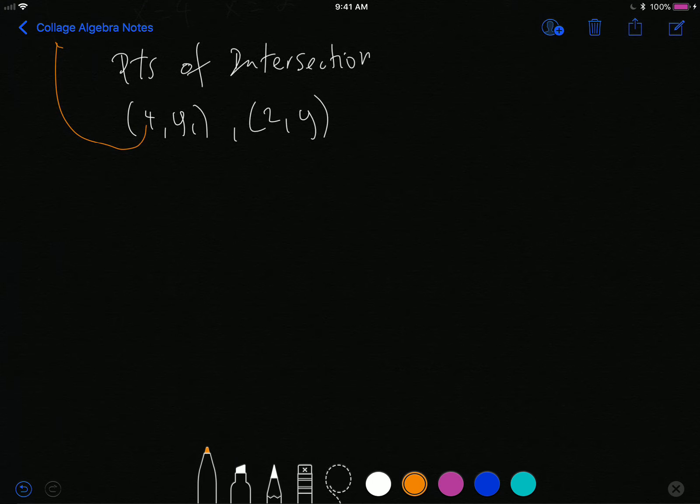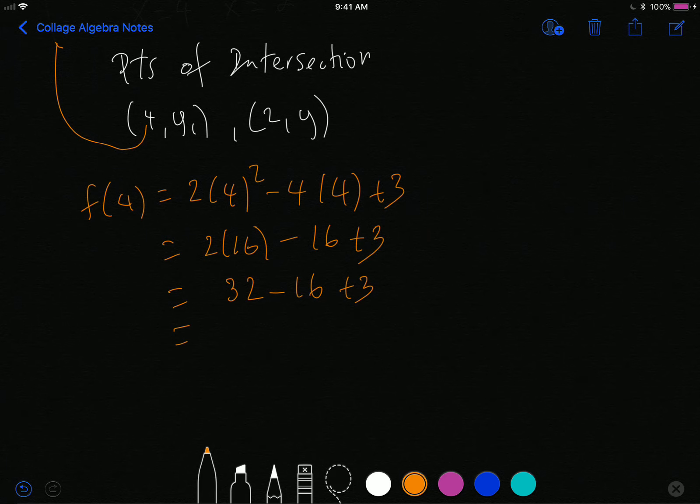So let's go ahead and let's use f. f of 4 is equal to 2 times 4 squared. Maybe you at home could take g, but you know what the answer is going to be. That's 2 times 16 minus 16 plus 3. So that's 32 minus 16 plus 3, that's 19. So the corresponding point is 4 comma 19.